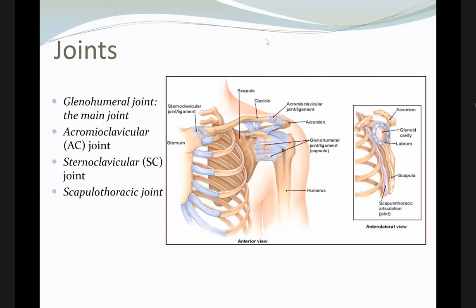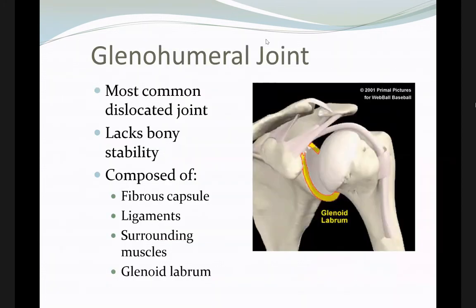The glenohumeral joint, formed by the humerus and the glenoid, has multiple ligaments to hold it in a stable position. The rotator cuff muscles also hold it in position and contribute to stability. The stabilizers of the glenohumeral joint are the ligaments, the labrum (the cartilage in the glenoid), and the rotator cuff muscles.